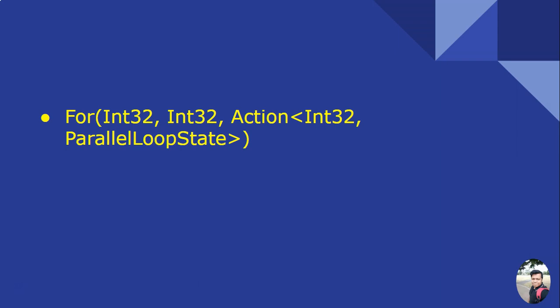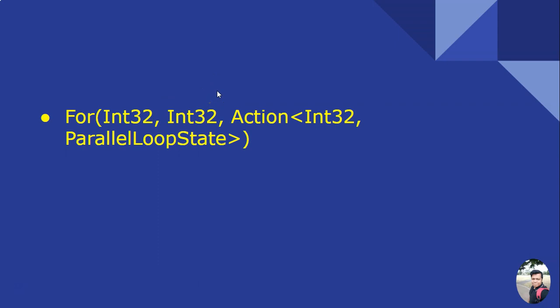This object is used to interact between iterations in a loop. Say you are running a loop from zero to five — that means index zero to four will run — and you want to have interaction between these iterations. The ParallelLoopState object will help us achieve that.